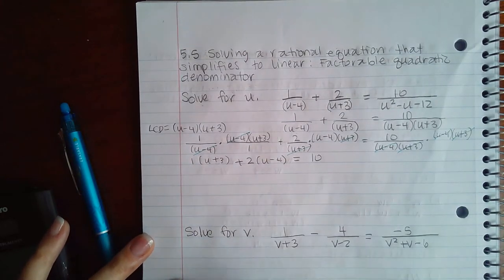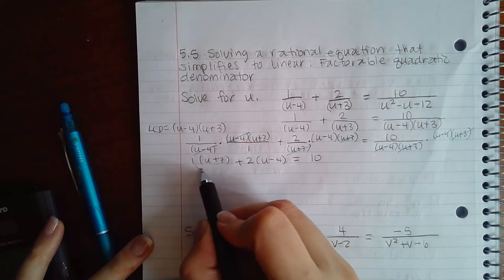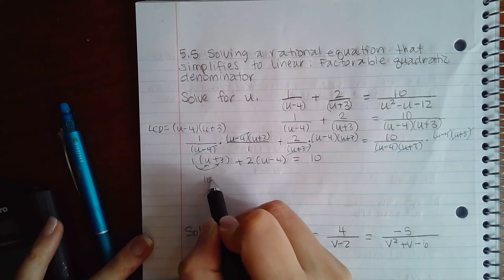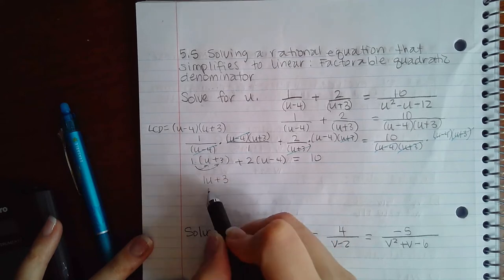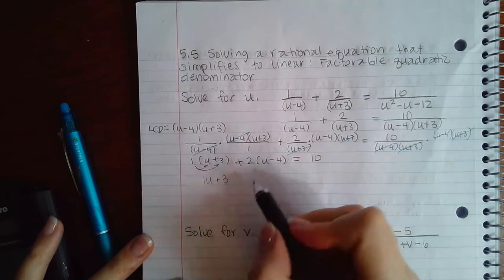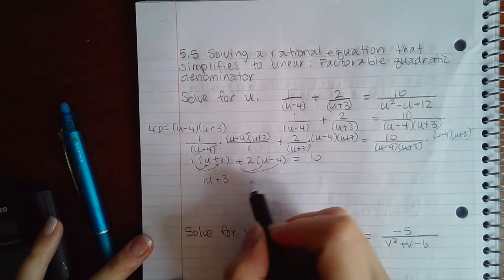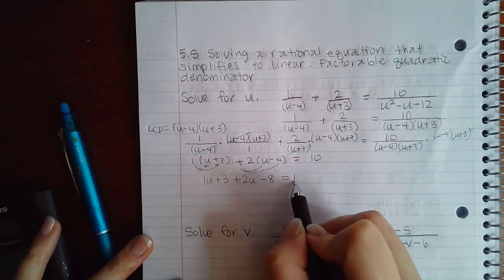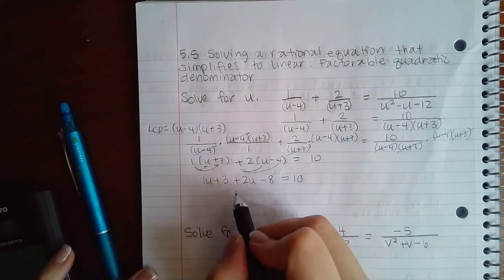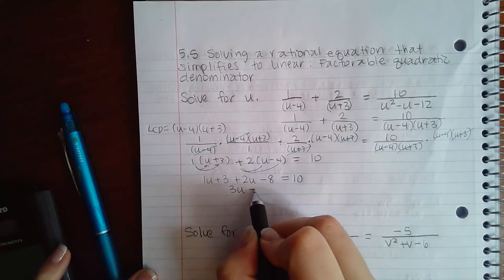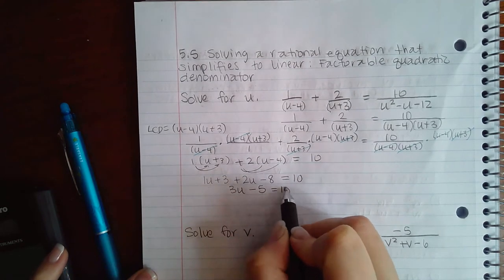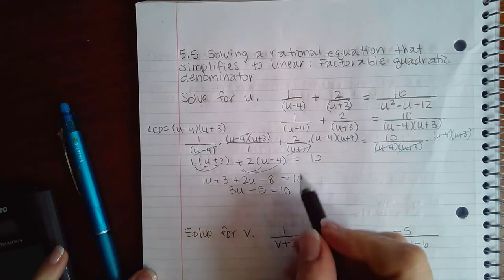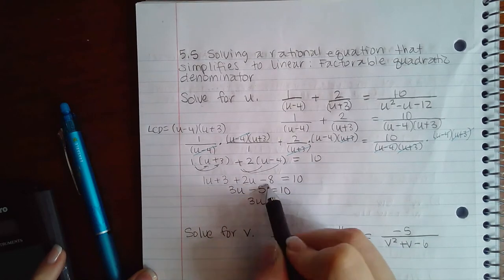If I distribute this 1, I end up with u plus 3. Then if I distribute this positive 2, I get positive 2u and a negative 8. If I combine like terms, I get 3u minus 5.